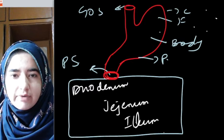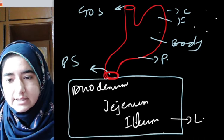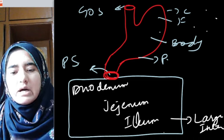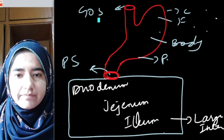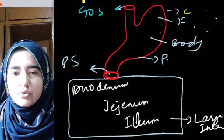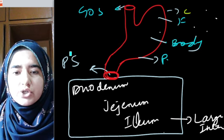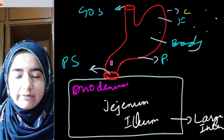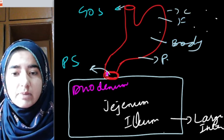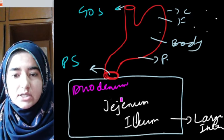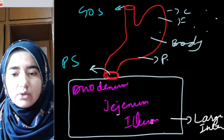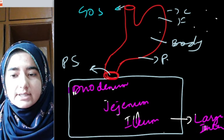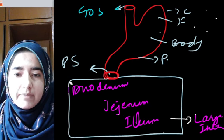Ileum finally opens up into the large intestine. The large intestine is also distinguishable into different parts — cecum, colon, and rectum. Duodenum, jejunum, and ileum are the three regions of the small intestine, with ileum being the highly coiled portion.